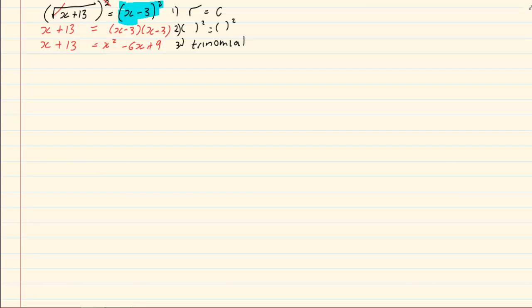Now once we have done that we are at a normal trinomial. We have x squared minus 6x plus 9 minus x minus 13 is equal to 0. Leaving us with x squared minus 7x minus 4 is equal to 0. So once we have done that we have to look at the trinomial.